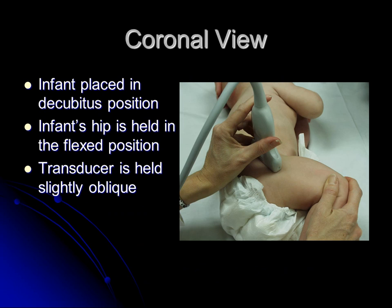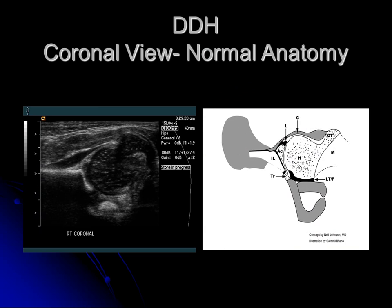This is an example of obtaining the coronal view. The infant is placed in the decubitus position, the hip is flexed, and the transducer is held slightly oblique. I'll show you an example of normal anatomy. To our left is the ultrasound image, and to the right is a schematic to help with orientation. The infant's head is to our left and feet are to our right. This is the iliac wing, and this is the ossified portion of the acetabulum. I have arrows pointing to the corresponding schematics just to help orient you on the image.